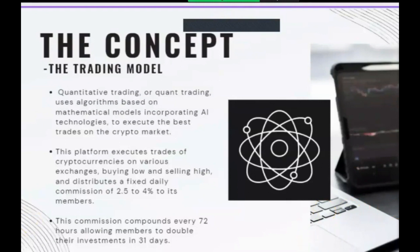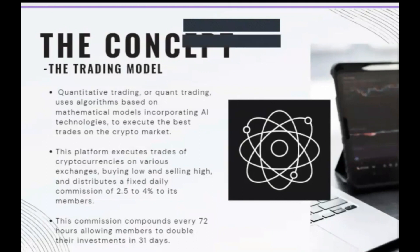We're not reliant on the actual value of the asset or coin. As long as there is a difference in price between two exchanges, we will make money - which there always is. The platform executes trades of cryptocurrencies on various exchanges, buying low and selling high, then distributes a fixed daily commission of 2.5 percent on the first level, leading up to four percent on higher levels.